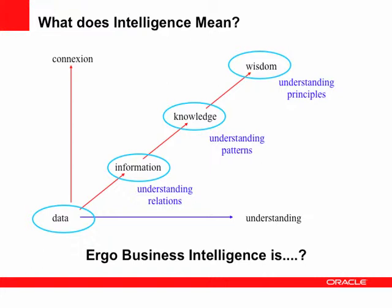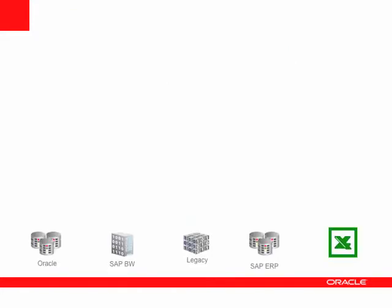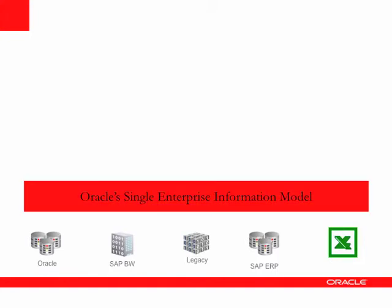So what does that mean to us? Here we have a typical view of an IT landscape. Down the bottom you have your Oracle, SAP, BW, some legacy systems, and of course let's not forget Excel. Above that we have a single enterprise information model that's put in place using our Oracle tools. What that allows us to do is to keep everything in one place — a single version of the truth.